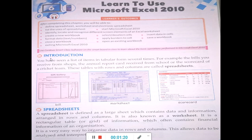Now let us see the introduction. You have seen a list of items in tabular form several times. For example, the bills you receive from shops, the annual report card received from school, or the scorecard of a cricket team. These tables with rows and columns are called a spreadsheet. You have seen many times data in tabular form — like a bill when you purchase anything, a mark sheet which is also in tabular form, and a scorecard, also in tabular form. All this data arranged in tabular form with rows and columns is called a spreadsheet.